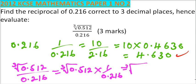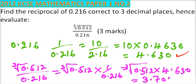so this is the cube root of 0.512, multiply by the reciprocal, which is 4.630, and this is equals to, using your calculator, you get 3.704.